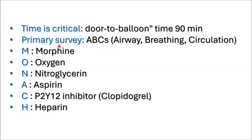Regarding the pharmacological treatments, we can use the protocol MONACH. M stands for morphine. Morphine is used to relieve chest pain that isn't relieved by nitroglycerin, and this helps reduce pain and anxiety, which can also lower the heart's oxygen demand.